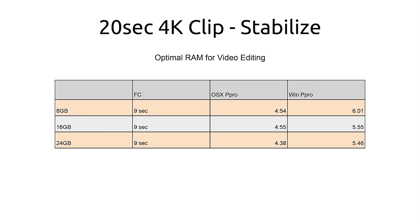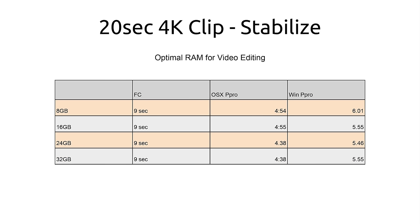Moving to 24 gigabytes, Final Cut still shows the same result. With Premiere Pro we do see a gain on both OSX and Windows, with a slightly larger gain on the OSX side. Finally with 32 gigs, it makes no difference in Final Cut — still 9 seconds. On OSX, the result is the same as 24 gigabytes, and on Windows running Premiere Pro we actually get slightly slower, back to the same result as 16 gigabytes. Overall, for 4K stabilization there's not much of a performance difference — we get a little faster but it's not a significant gain.